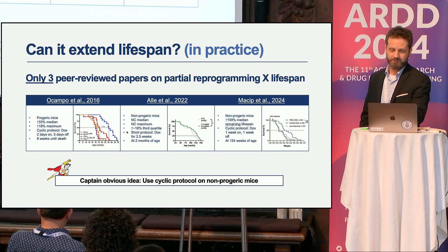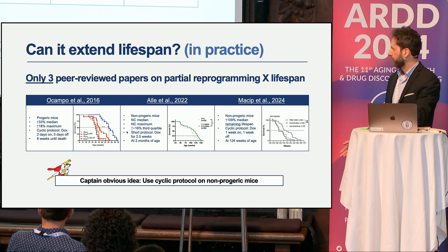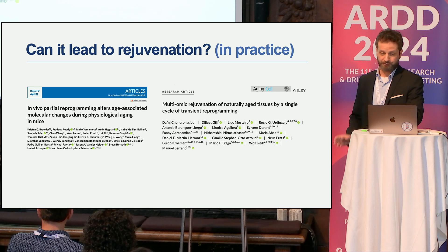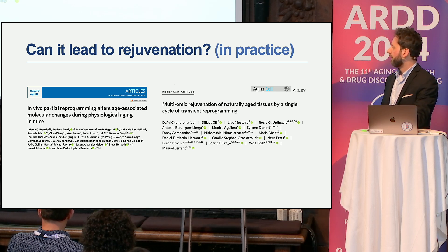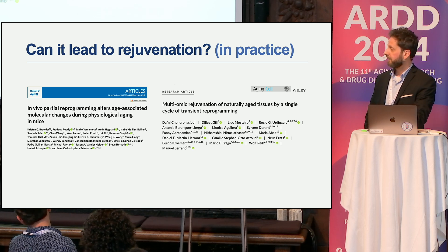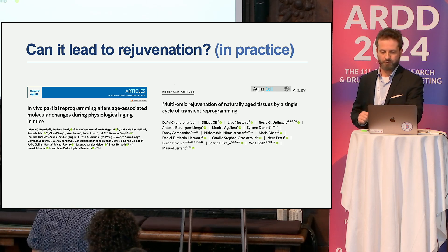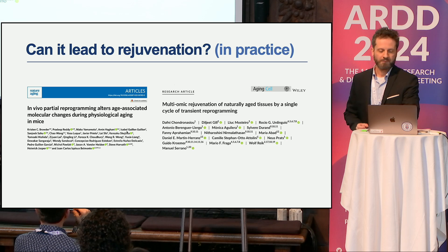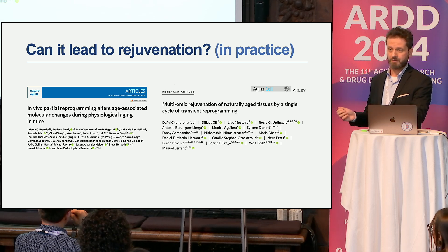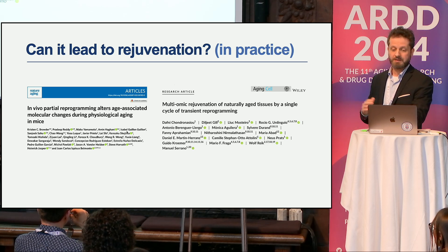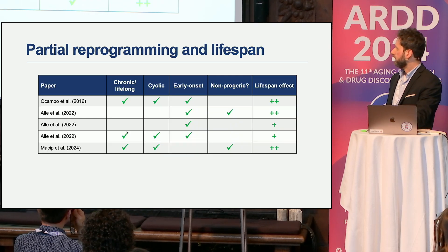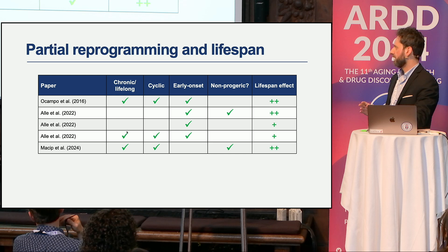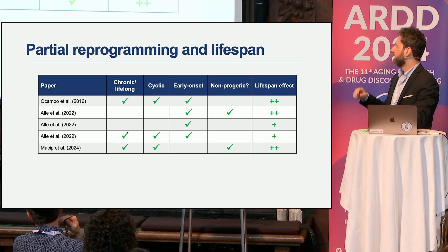The obvious idea is to take the Ocampo 2016 cyclic reprogramming protocol and apply it to non-progeric mice. Several studies have tried versions of this, assessing various tissues rather than full lifespan. After either a cyclic two-days-on five-days-off protocol or a transient protocol, rejuvenation was found in some tissues but not others. This could be because the onset was not early enough or the intervention was not strong enough in non-progeric animals. A summary table shows that no published study has all the hallmarks: chronic, cyclic, early onset, non-progeric, with full lifespan assessment.